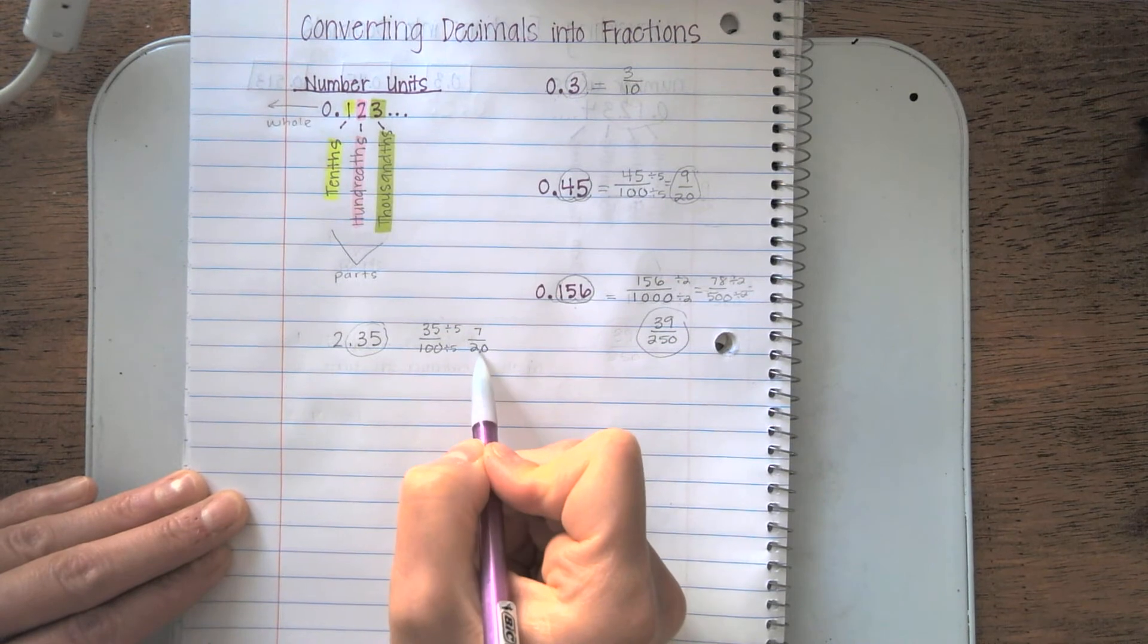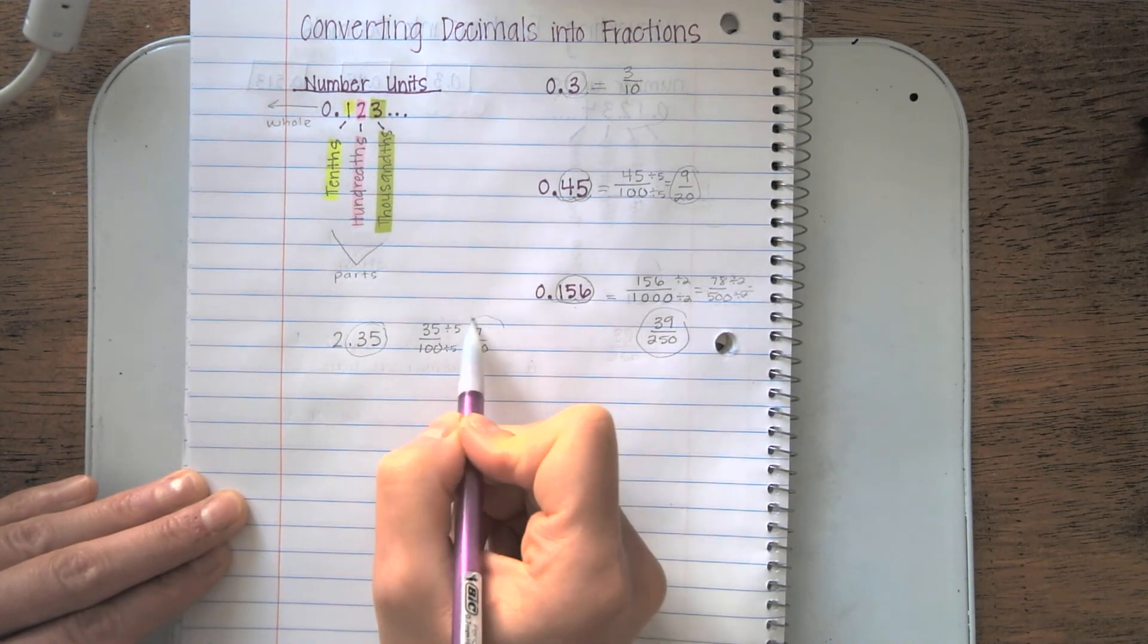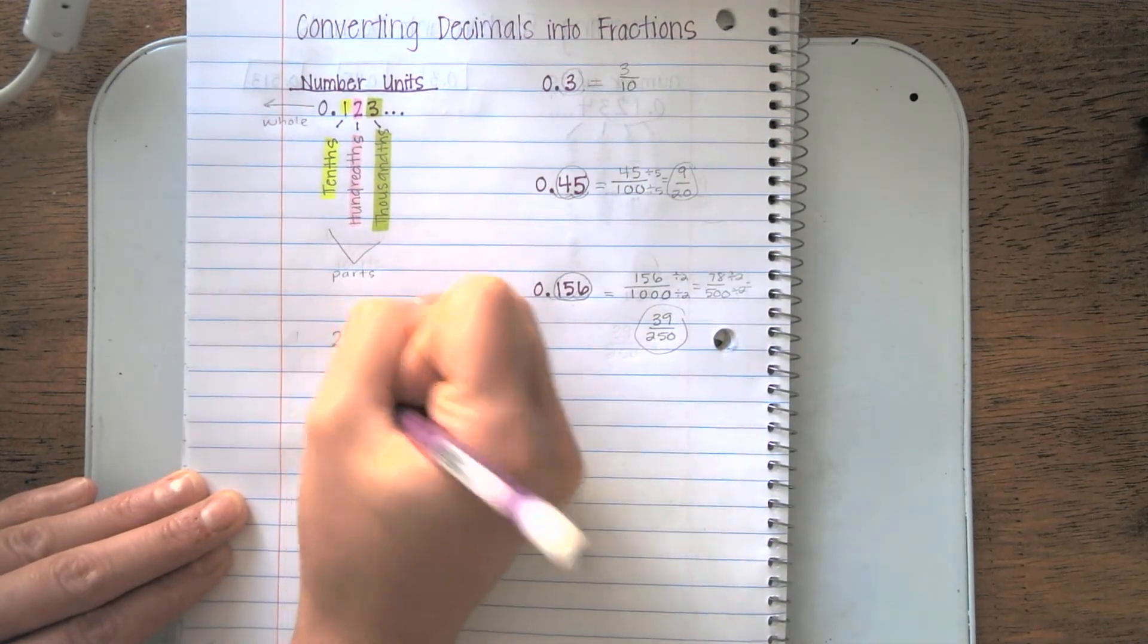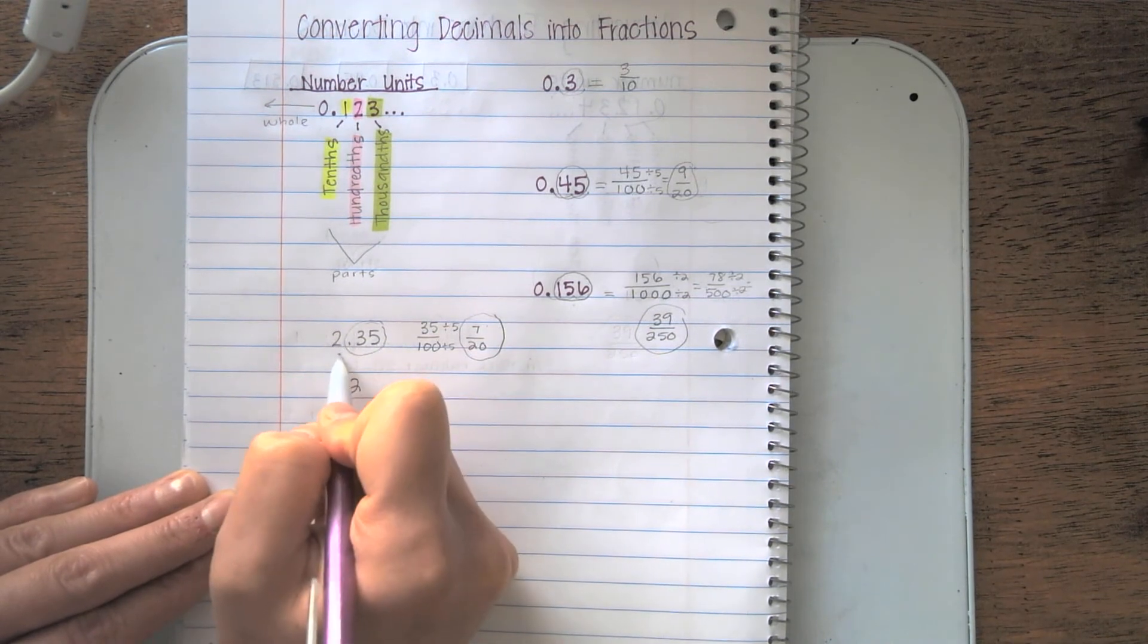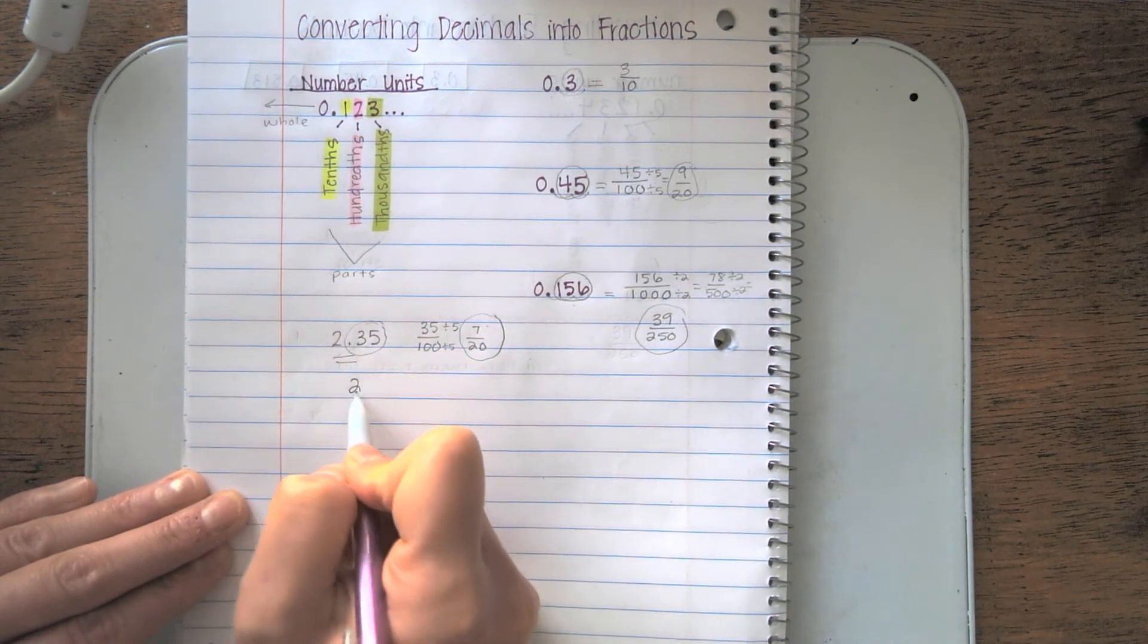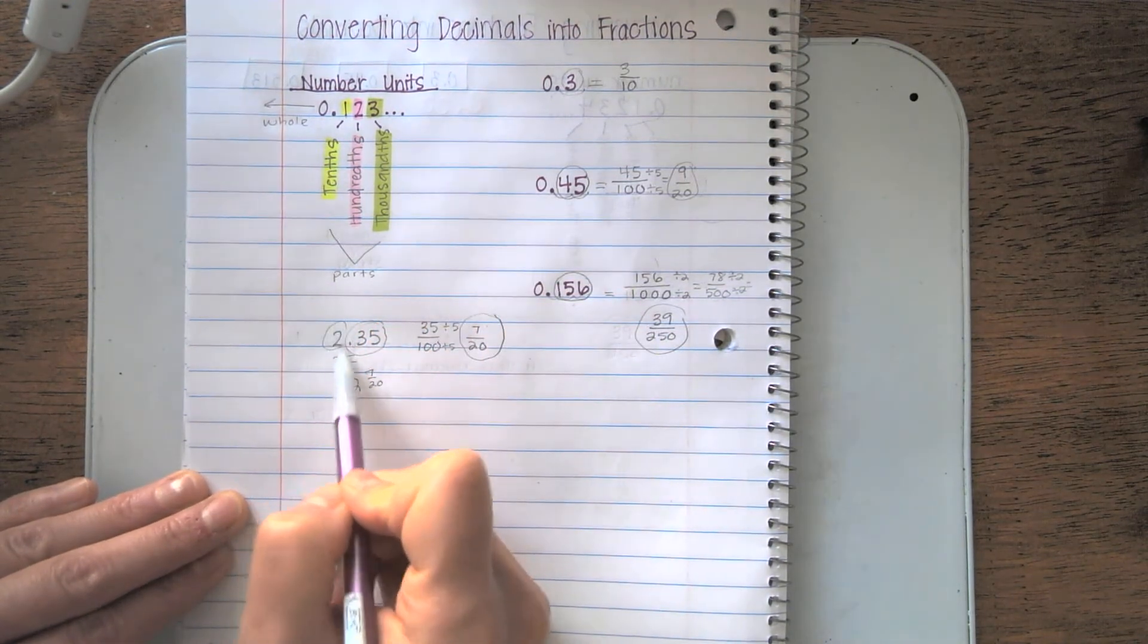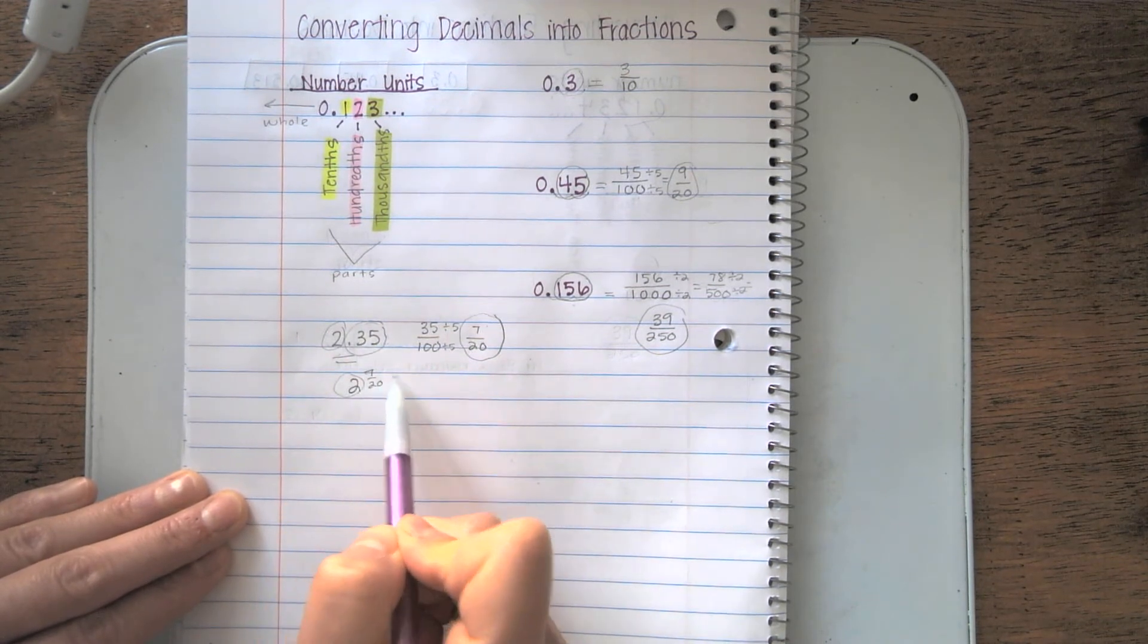7/20 is the simplest form. I know because 7 is a prime number. So 2.35 is the same as 2 and 7/20. My whole numbers don't change. They're not affected. We're only working with those parts there.